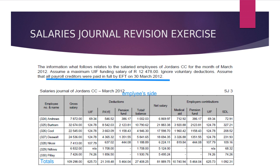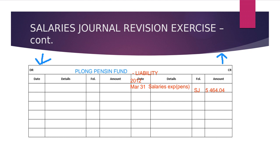We've got another one — same amount, but we still have to go there and record. Tell me now. Credit side? Yes. Salary contribution? No, I've never said that before. Pension fund contribution. Perfect. Pension fund contribution — can you see? And then the amount is going to be the same: 5,464.04.